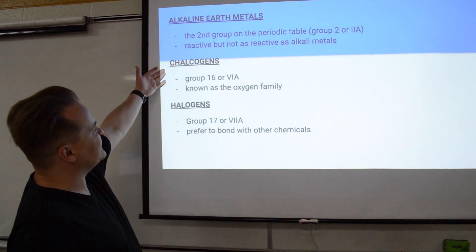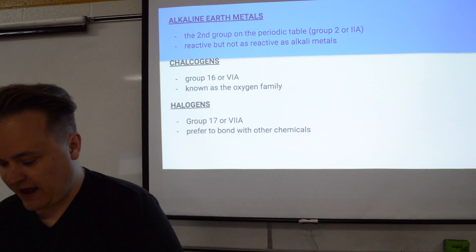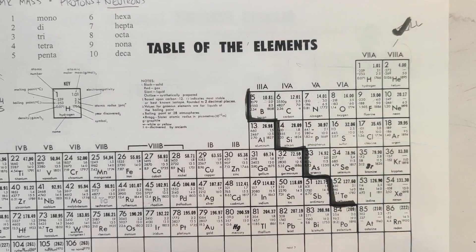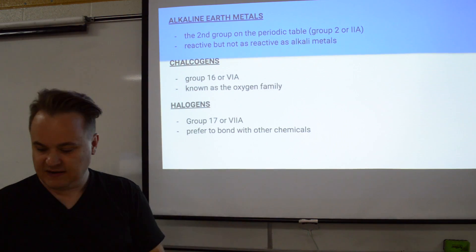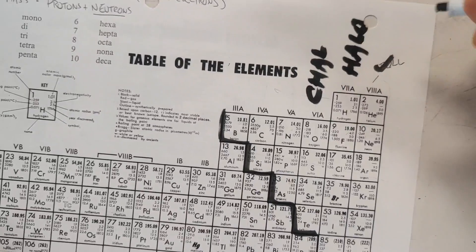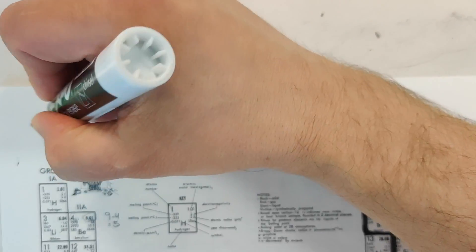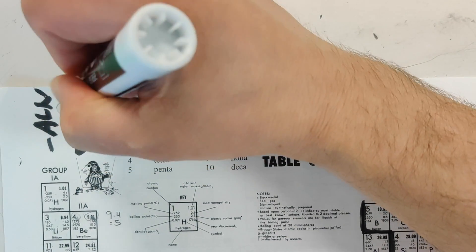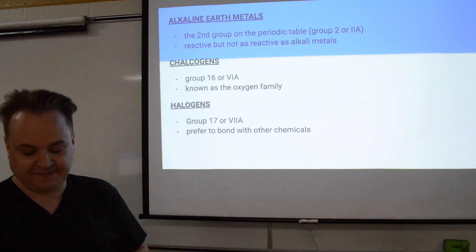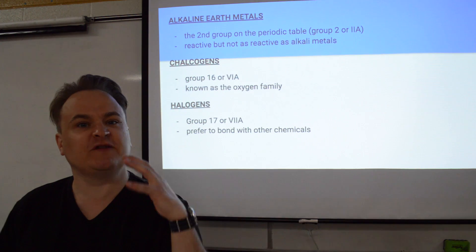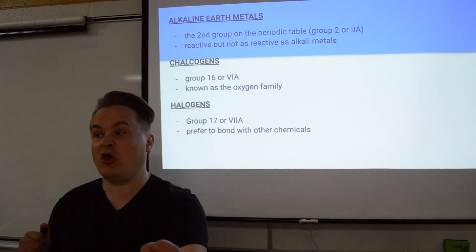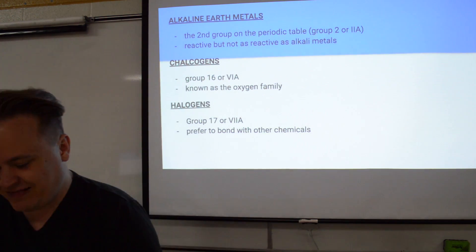We're going to move over to the chalcogens — that's the oxygen family. So you need to know that the oxygen family is called the chalcogens. Then the next group is the halogens. The halogens like to bond because their valence shell is almost full — it has seven out of eight electrons, and it's so close to being full that it really wants to bond with other things. That's why halogens are so reactive.